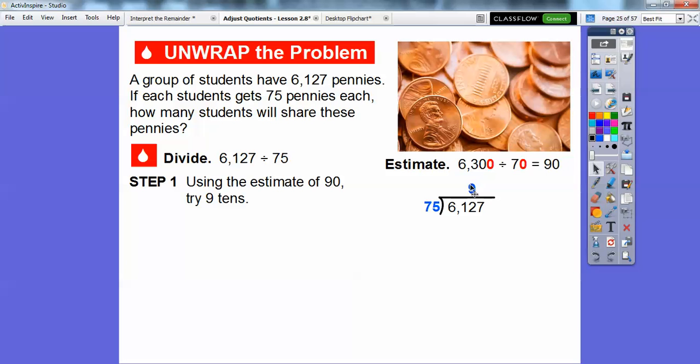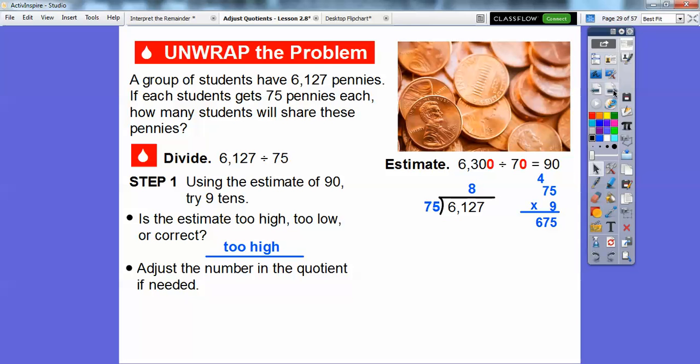Notice we place the 9 over the 10 spot. 75 times 9, we get 675. Now look, 612 minus 675—we can't do that. It's too big. This number is bigger than this one. So we have to back off a little bit and try 8. The estimate is too high.